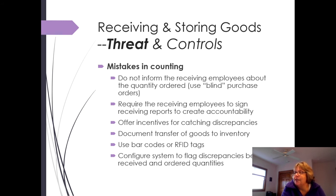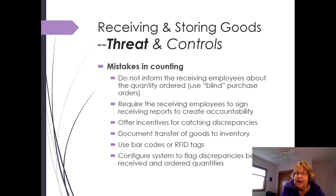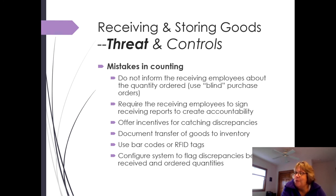Make sure receiving employees sign the receiving reports — that helps create accountability, and if there are recurring issues with certain parts, you can trace back whether somebody maybe shouldn't be receiving or their counting is a little off. You can also offer incentives to catch discrepancies, though use incentives wisely. If I knew I got a cash bonus for catching mistakes, I'd probably try to make a deal with my colleagues — 'you make a mistake, I'll catch it here, you catch mine' — so it can work, but be careful.